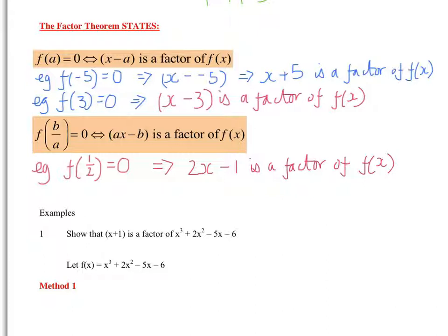If I give you another example — f of three-fifths equals 0 — can you write down what the factor of the function is this time? It should be: a is 5, so 5x minus 3 is a factor of f of x.